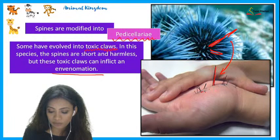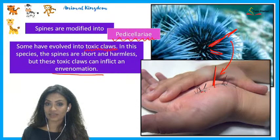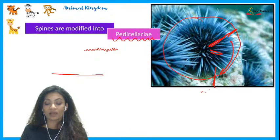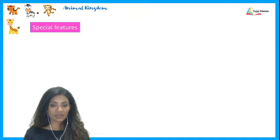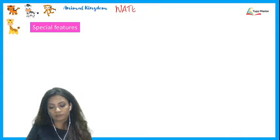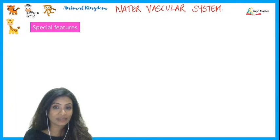The sea urchin, with its circular body shape, clearly shows the presence of these spines. Now talking about a most special feature of echinoderms — it is called the water vascular system. This name may remind you of the water canal system from phylum Porifera, where water entered through pores called ostia, passed through the spongocoel, and exited through the osculum.